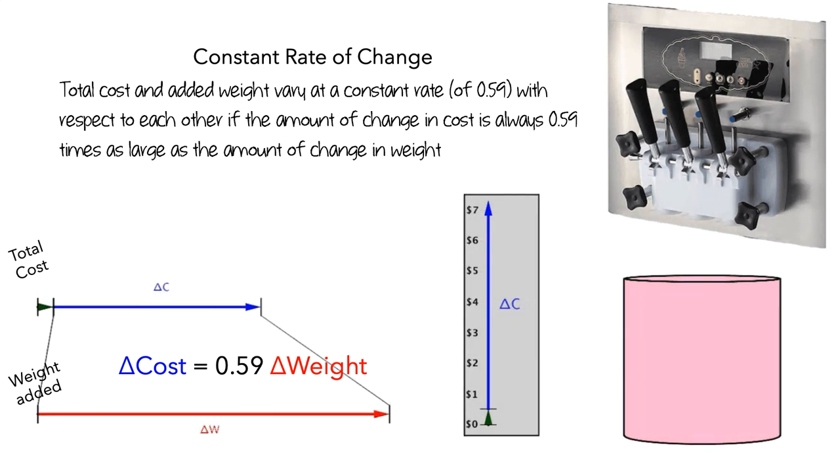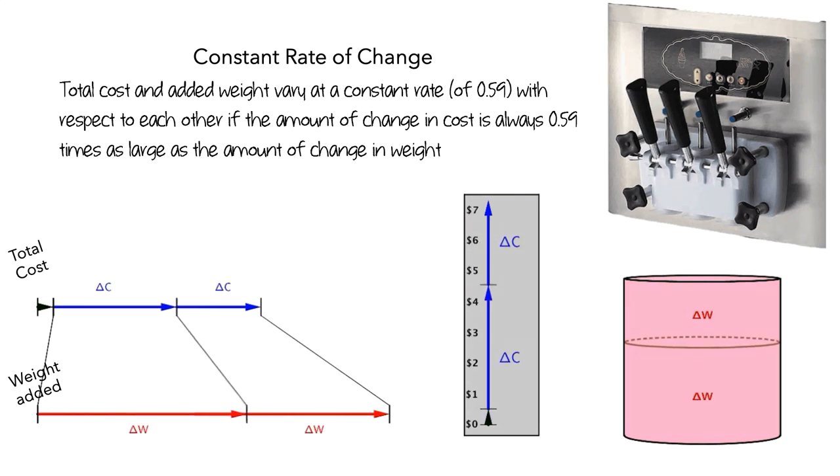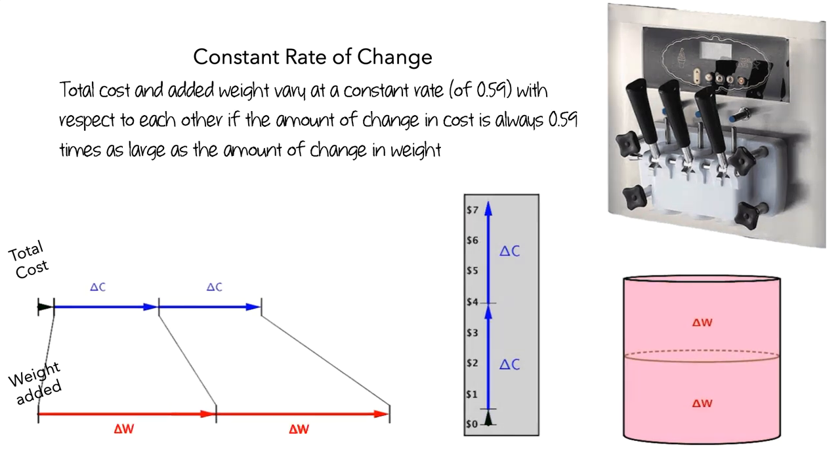We can also think about how this would work if, instead of treating the added weight of frozen yogurt as a single large part, we split our weight into two equal-sized parts. To make things a little easier to see, let's rotate the cost bar.